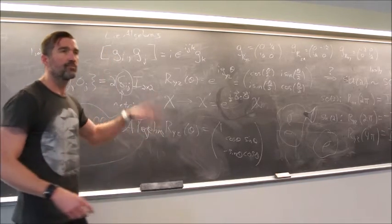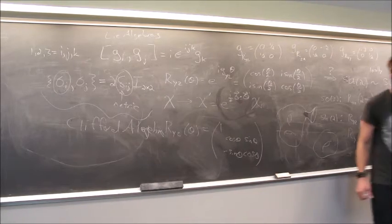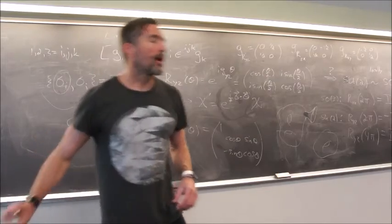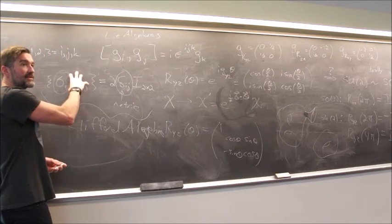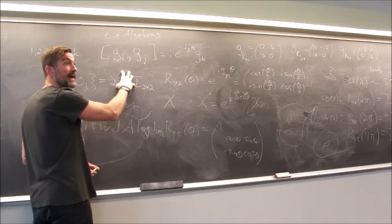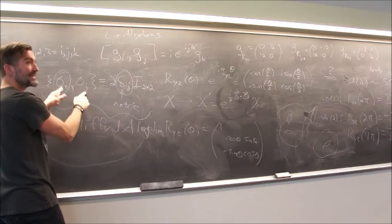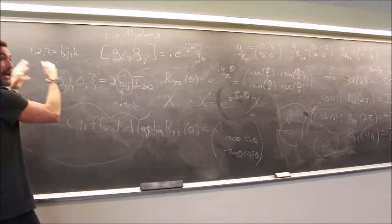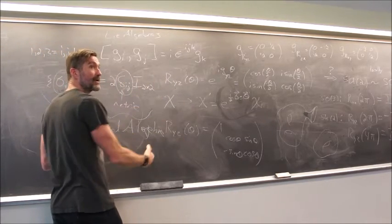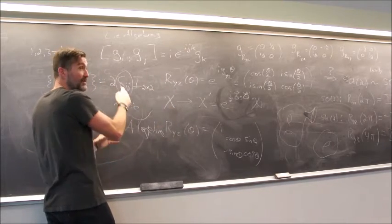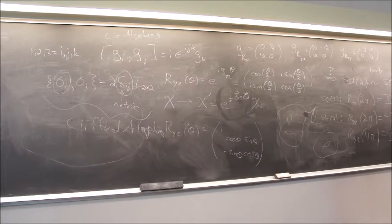An algebra expressed in terms of anti-commutators instead of commutators is called a Clifford algebra. The space-time coordinate is labeling the separate Pauli matrices, but the matrices themselves are 2x2—so we're seeing space-time dimension enter the story but not in the way we're used to. The matrices here are 2x2, but there are three of them, forming a structure where the space-time index labels the different matrices while the spinor indices are internal.